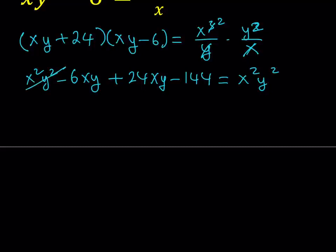Now x squared y squared cancels out. We end up with, if we add like terms, 18xy. And let's go ahead and put the 144 on the other side and divide both sides by 18. If you do that, you're going to get xy equals 8.